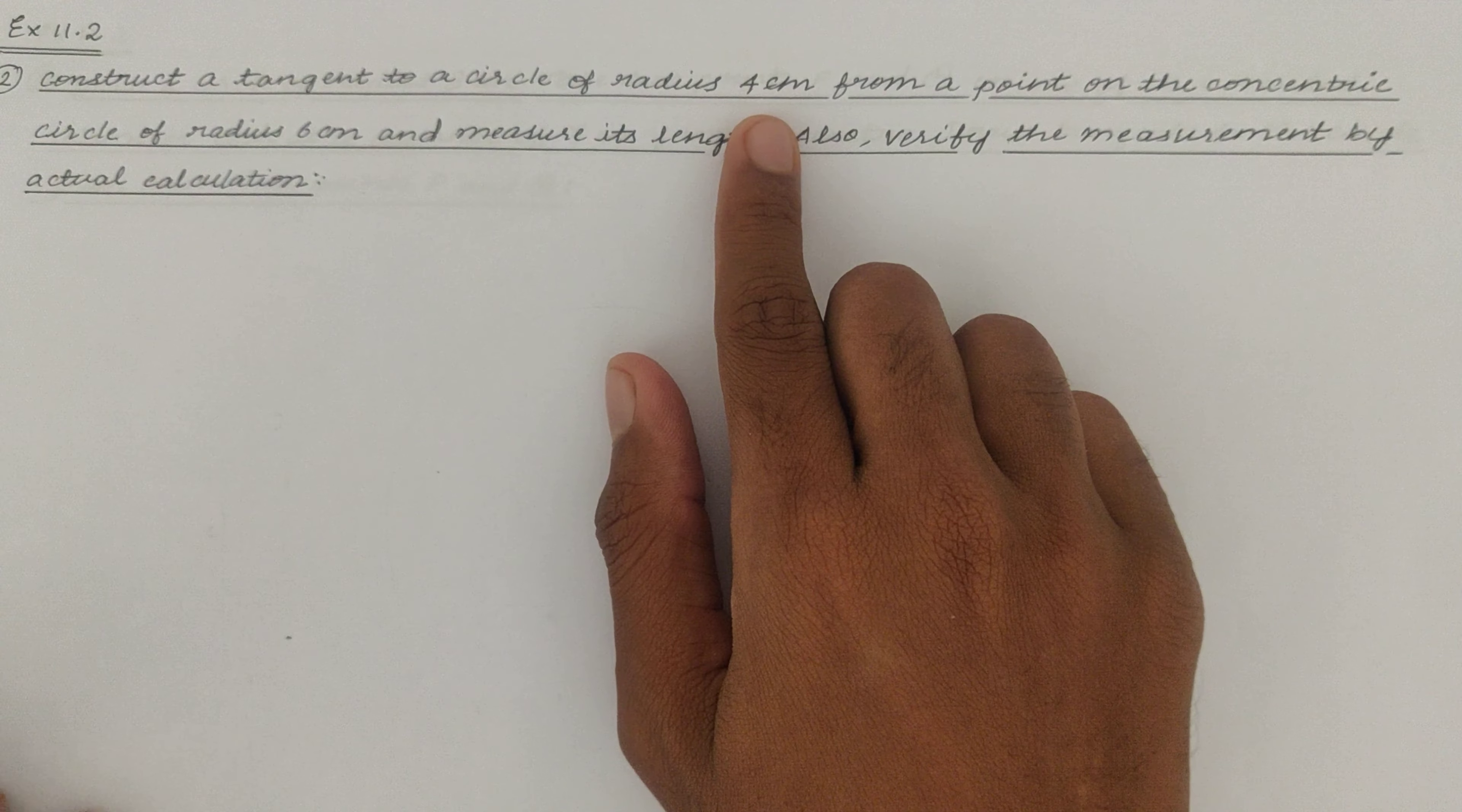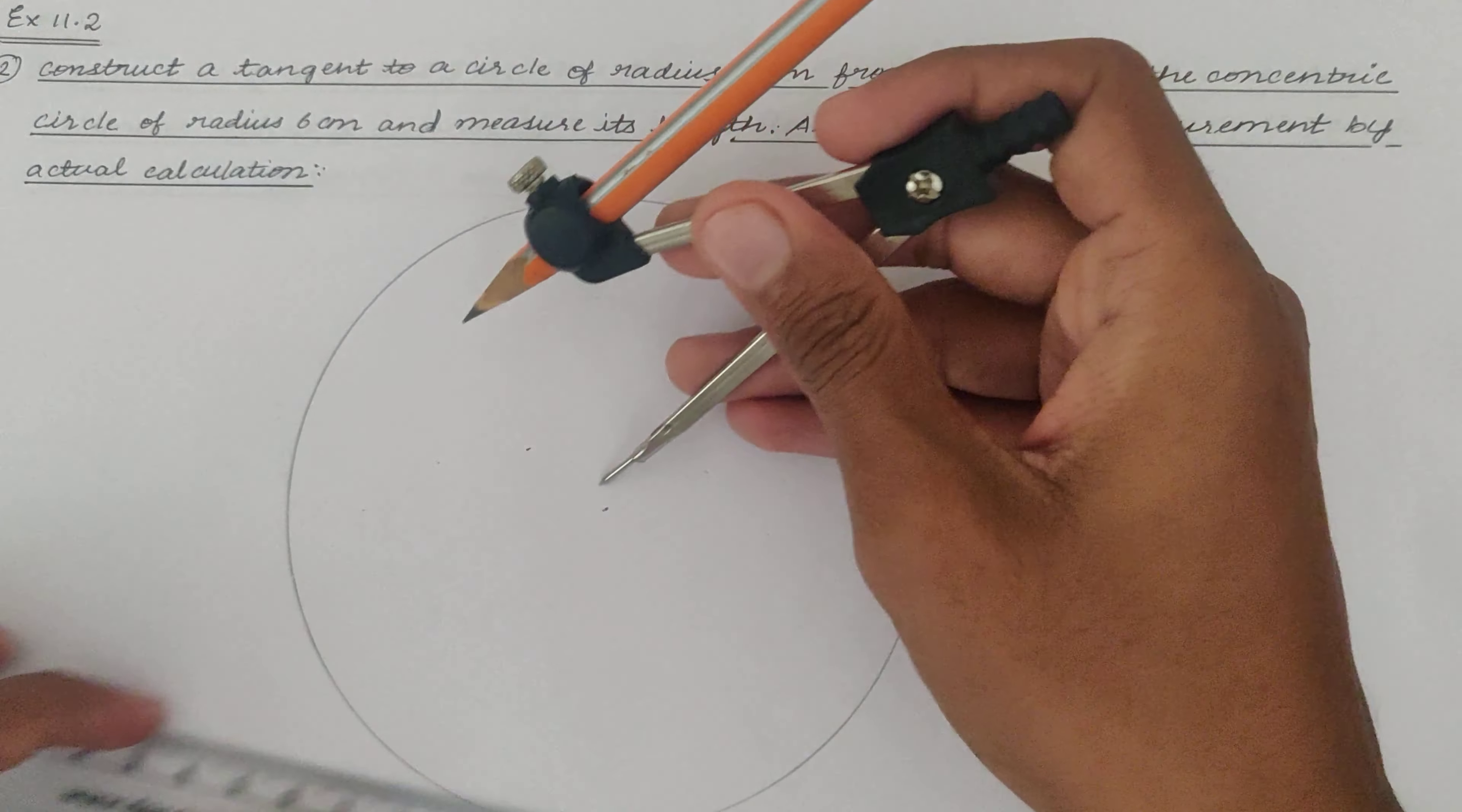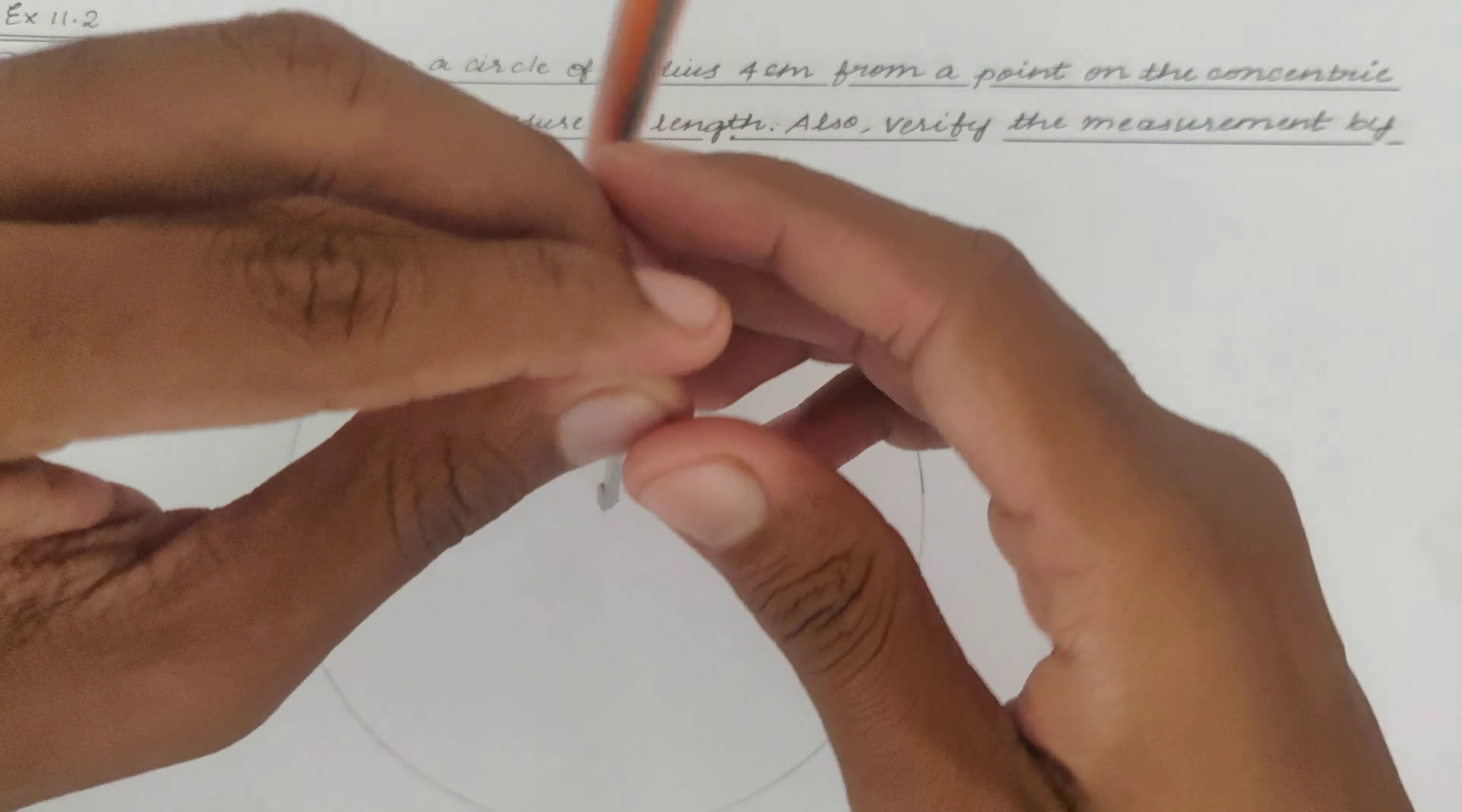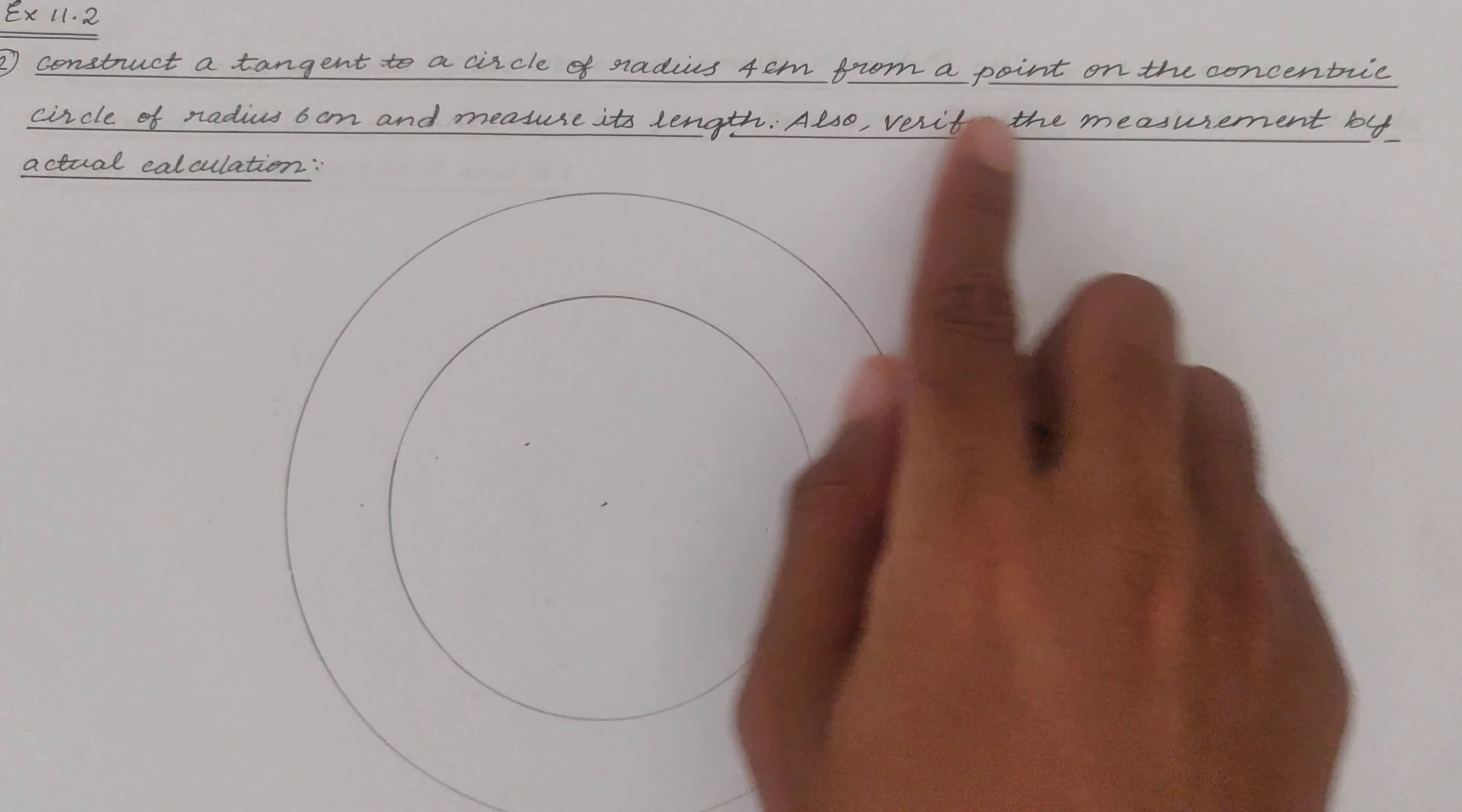So I'm drawing the outer circle whose radius is 6 centimeters like this and I'm going to take 4 centimeters using the compass and with the same center I'm going to draw another circle whose radius is 4 centimeters. So both the circles share the same center and that's why they are called concentric circles.